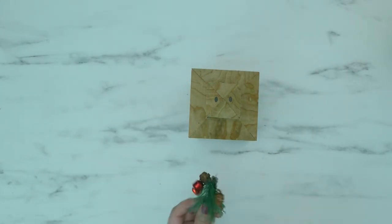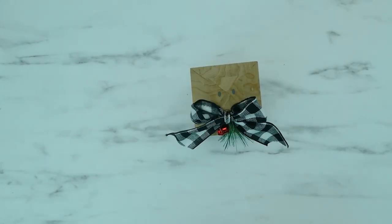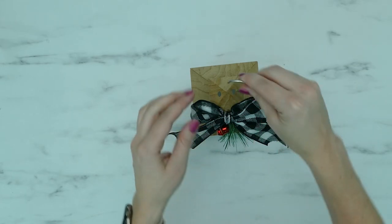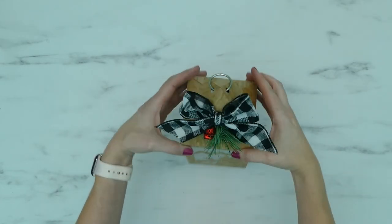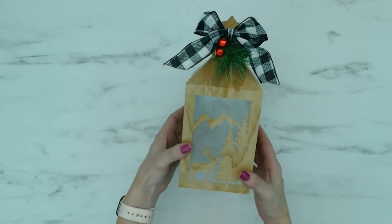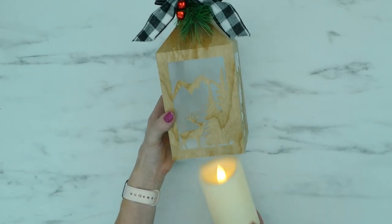To finish the lantern, I glued on some Christmas embellishments and a bow. You can also thread a small book ring through the holes at the top of the lantern to complete the project. Use an LED candle to light up the lantern and this project is finished.